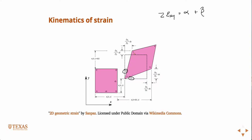That angle in between would be pi over 2 minus those two angles, right? Or pi over 2 minus 2 epsilon xy. So we're basically just going to call the shear strain 2 epsilon xy as the sum of these two angles.